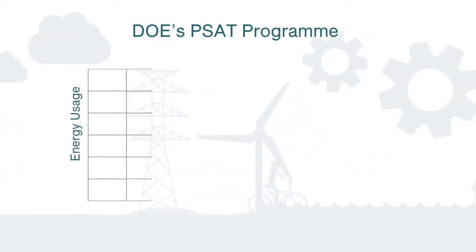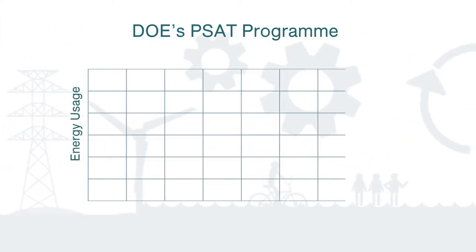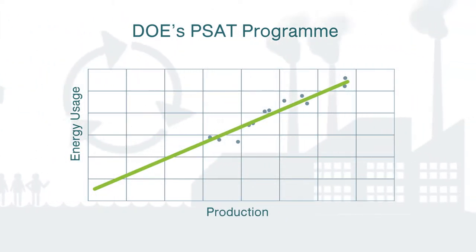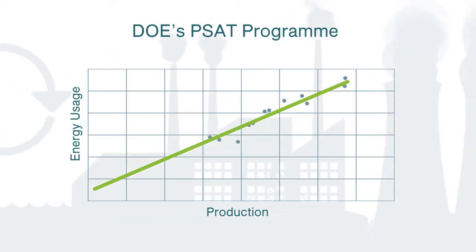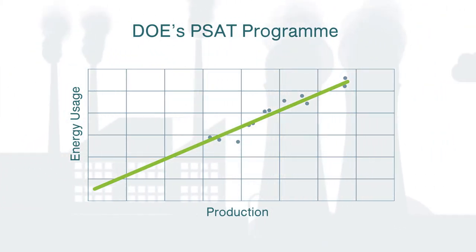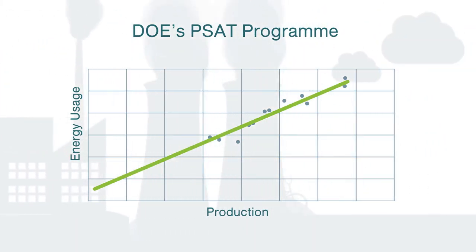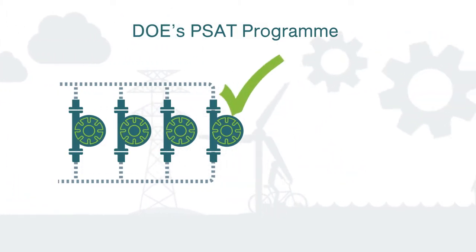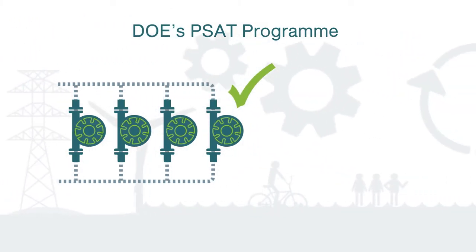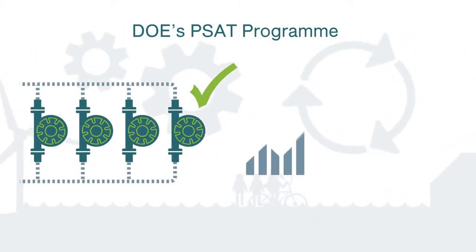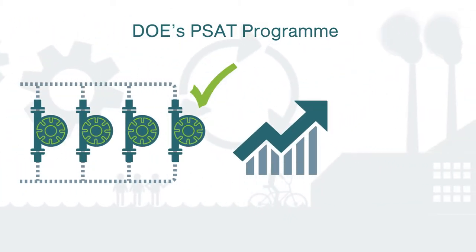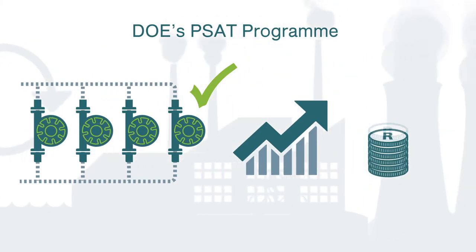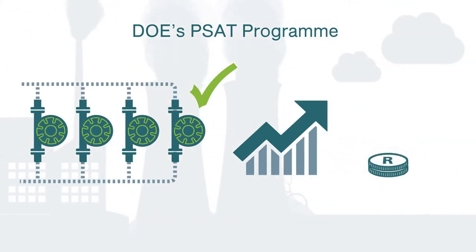The USDOE's PSAT software tool can be used to provide a preliminary analysis and overview of savings. When a good pump system savings opportunity is identified, a more advanced analysis can be performed to determine the most cost-effective improvement for pump system optimization.